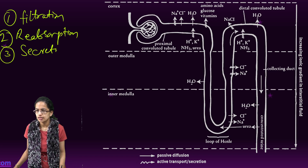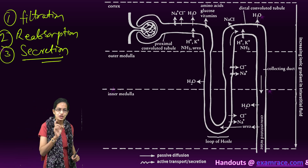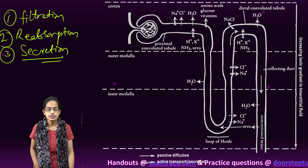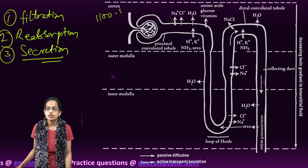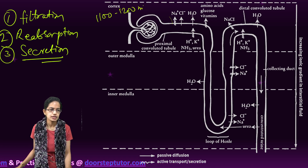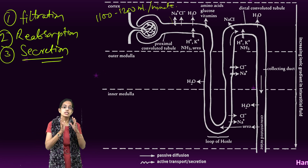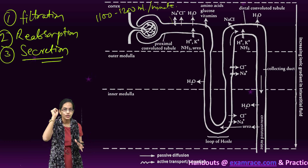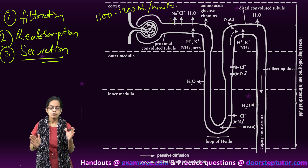The first stage, filtration, occurs in the glomerulus and the renal capsule. Here, nearly 1100 to 1200 milliliters is filtered per minute, and of this filtered blood, which is one-fifth of the blood being pumped by the ventricles of the heart.